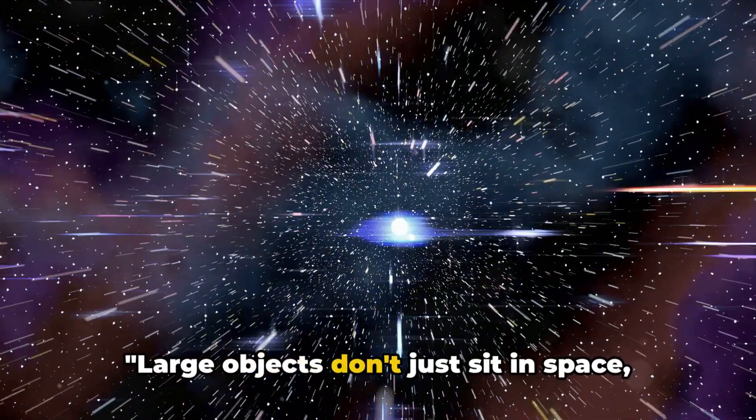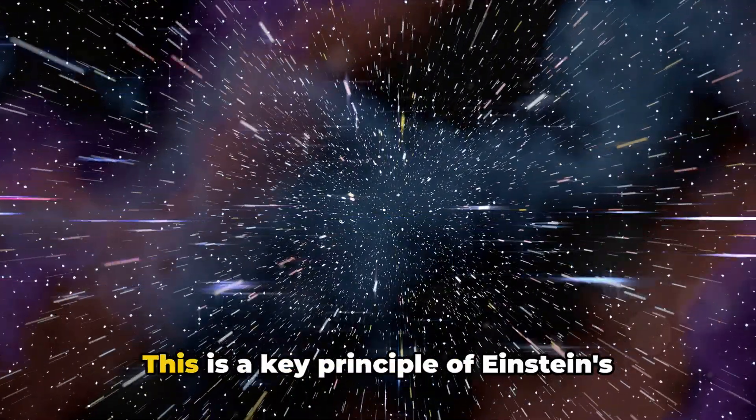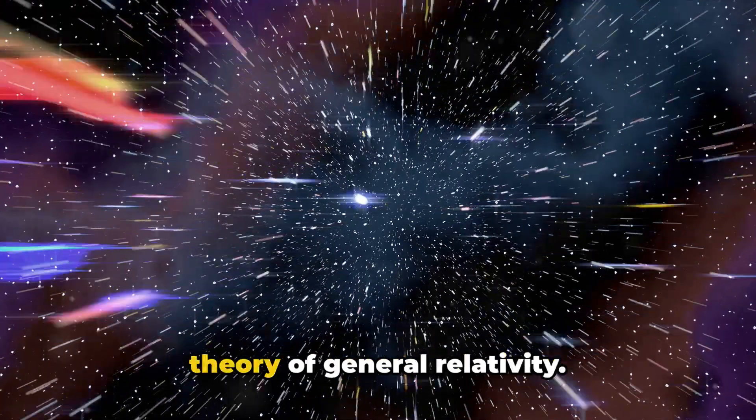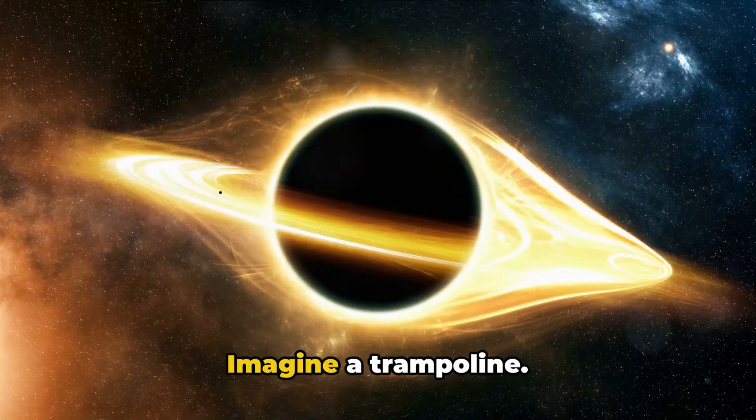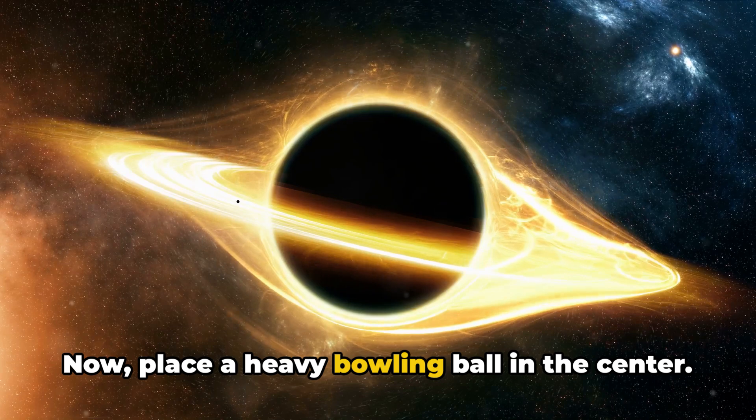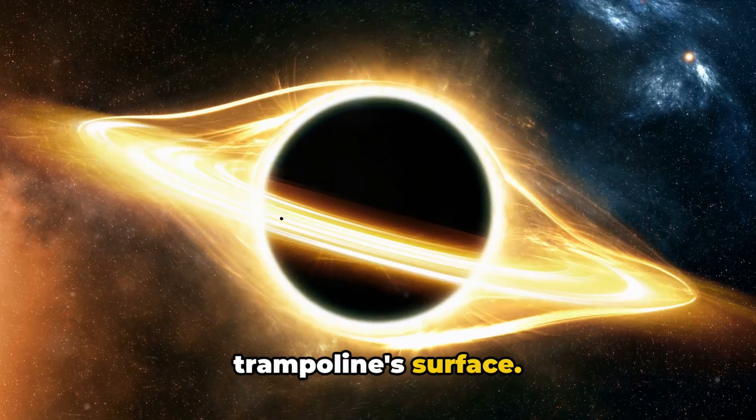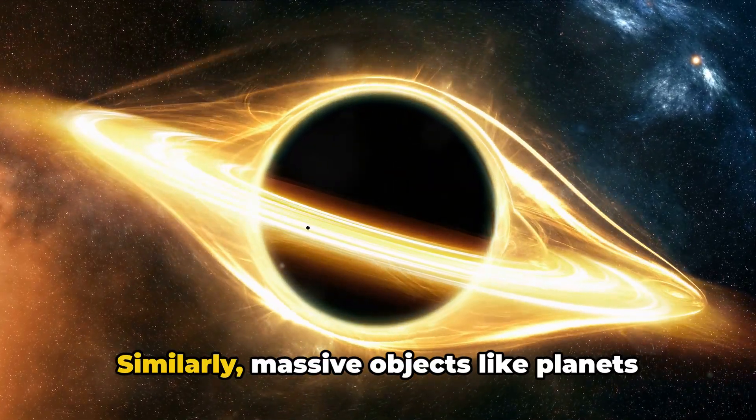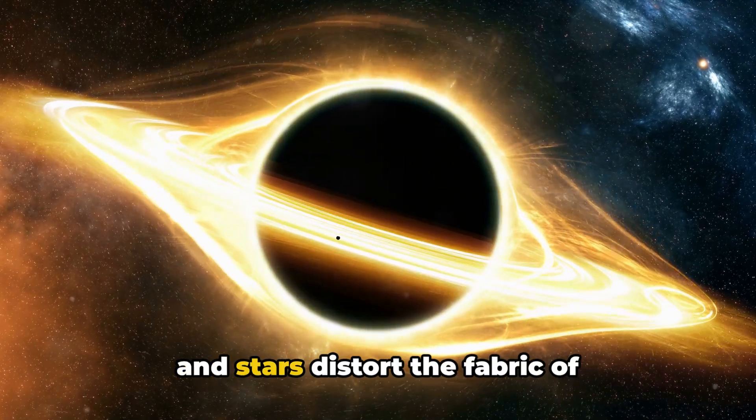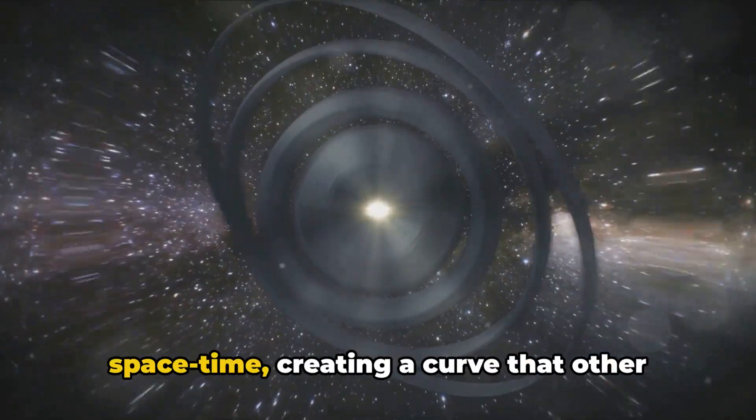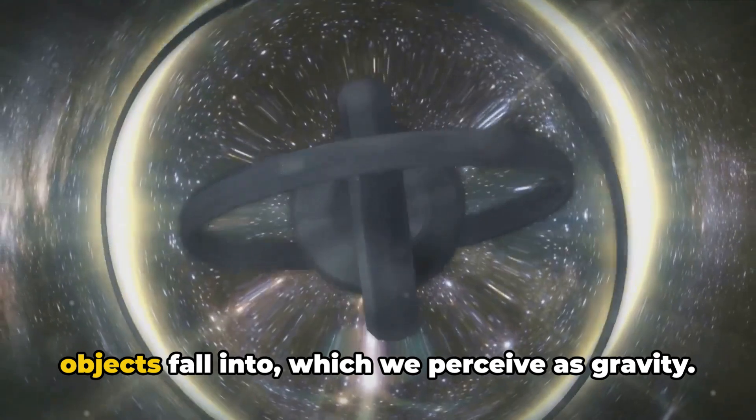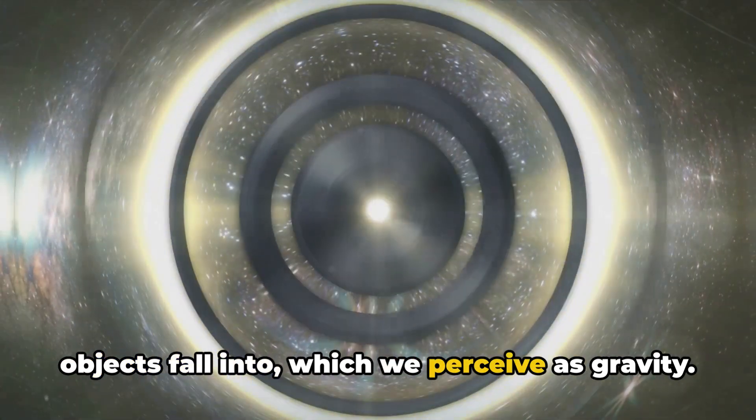Large objects don't just sit in space, they warp it. This is a key principle of Einstein's theory of general relativity. Imagine a trampoline. Now place a heavy bowling ball in the center. The ball will sink, distorting the trampoline's surface. Similarly, massive objects like planets and stars distort the fabric of space-time, creating a curve that other objects fall into, which we perceive as gravity.